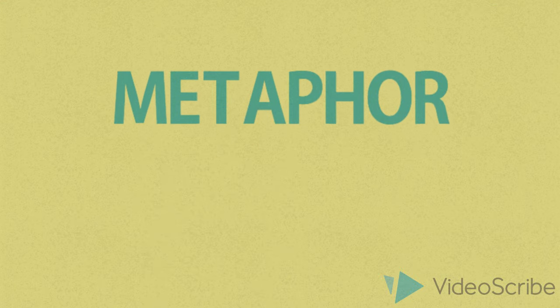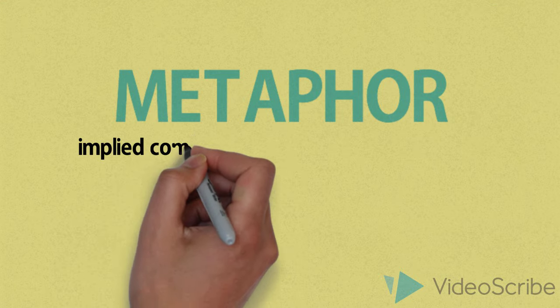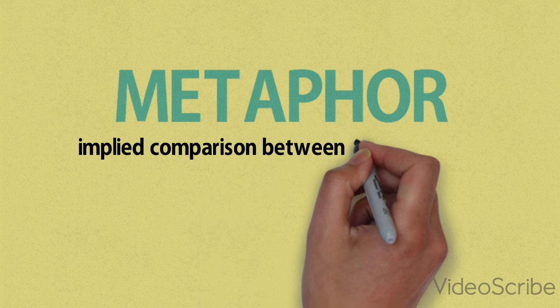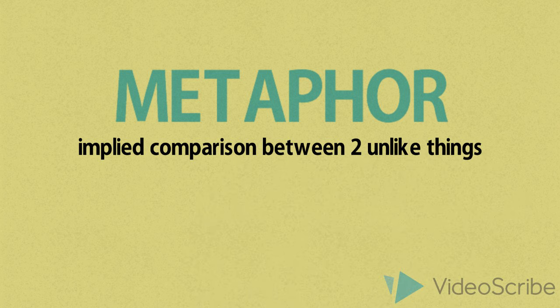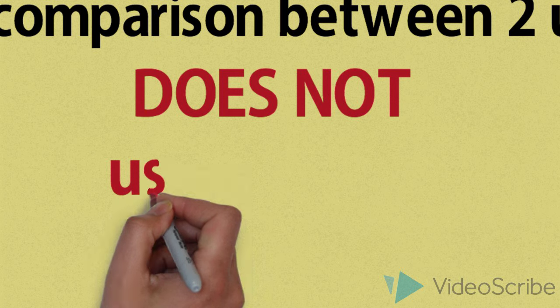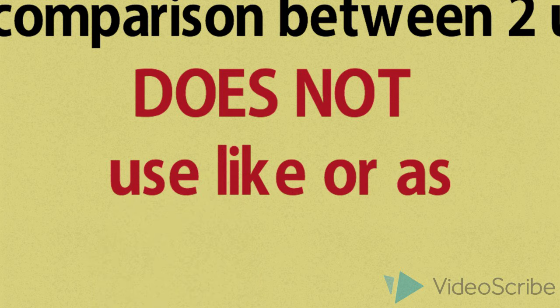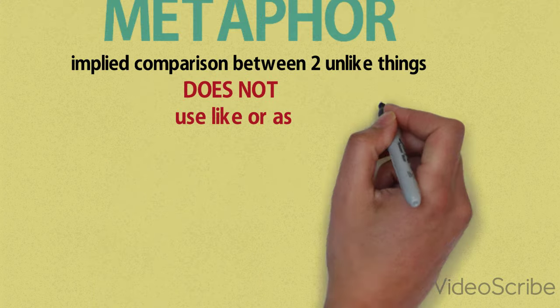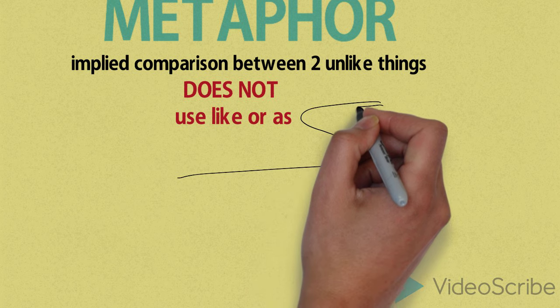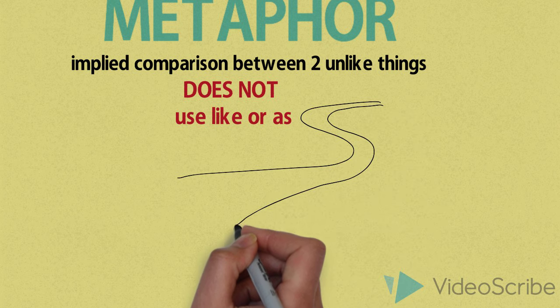A metaphor is very similar to a simile. It is a figure of speech which involves an implied comparison between two relatively unlike things using a form of to be. So it compares things without using like or as. An example would be the road was a ribbon wrapping through the desert.